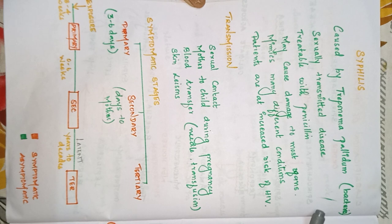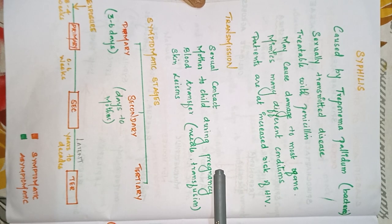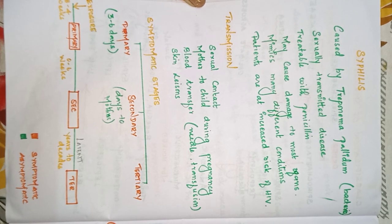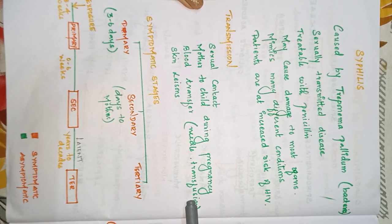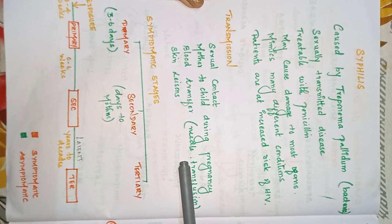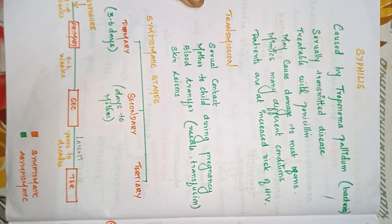Syphilis is transmitted through sexual contact and having multiple sex partners. It can also be transmitted from mother to child during pregnancy. Other routes include blood transfusion or infusion, using an infected person's needle, and contact with skin lesions of an infected person.